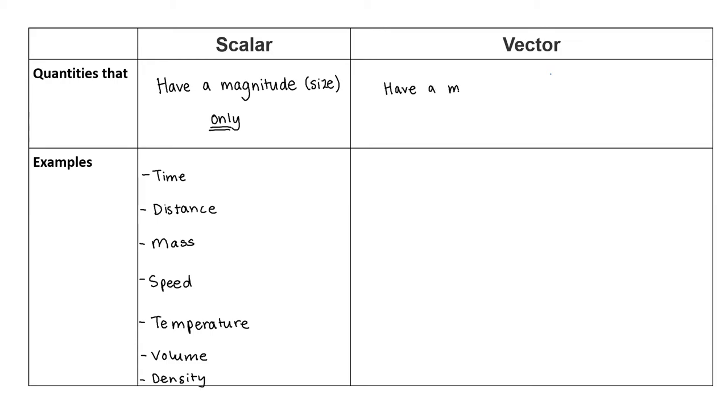This is compared to a vector quantity, which has both a magnitude and a direction, which both need to be specified. Some examples of vector quantities include velocity, which is speed in a specific direction, acceleration, force, momentum and displacement.